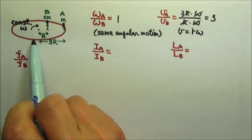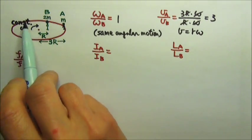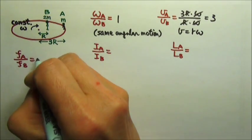Because the two people have the same angular motion, that means they would have the same period and the same frequency. So this ratio is 1.